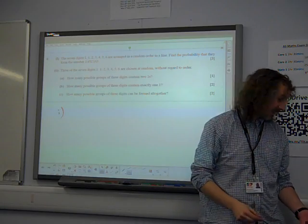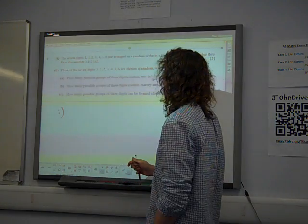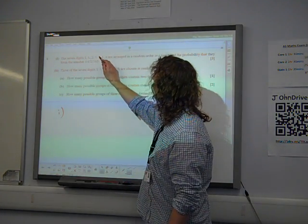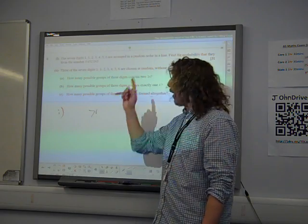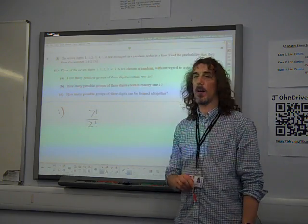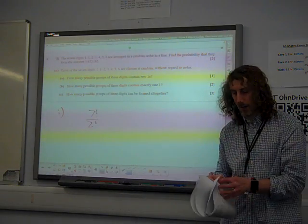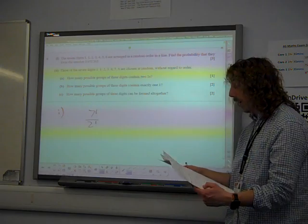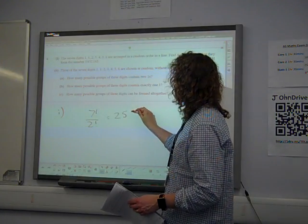So really, the question is saying how many arrangements are there, isn't it? That's what we're being asked. So all we need to do is think there are one, two, three, four, five, six, seven numbers. Two of them are the number one. So we're going to do the calculation seven factorial over two factorial. I did that calculation. It gave me the answer 2520.